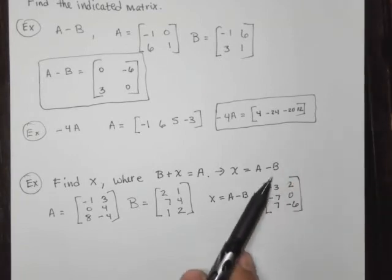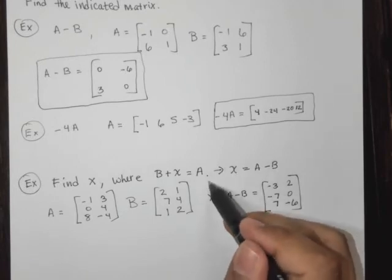And then we close it off. And so this is what the matrix X looks like. So this is what X is.